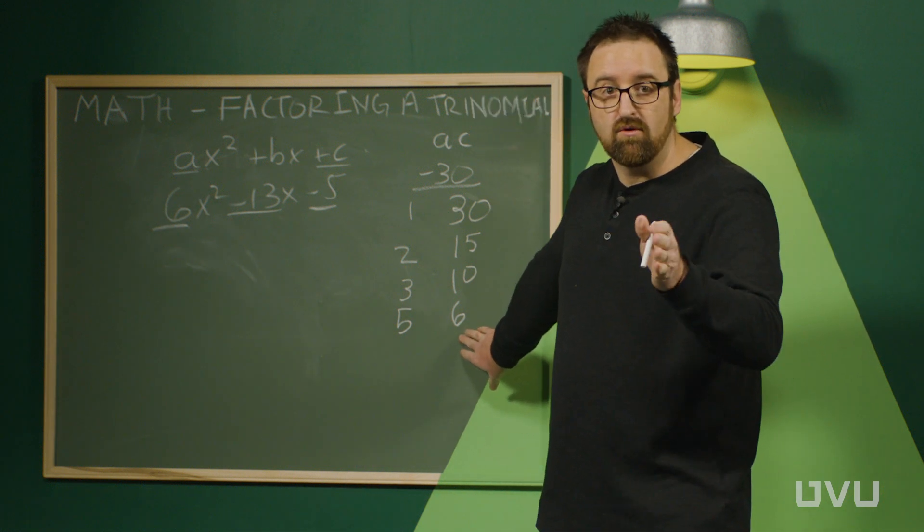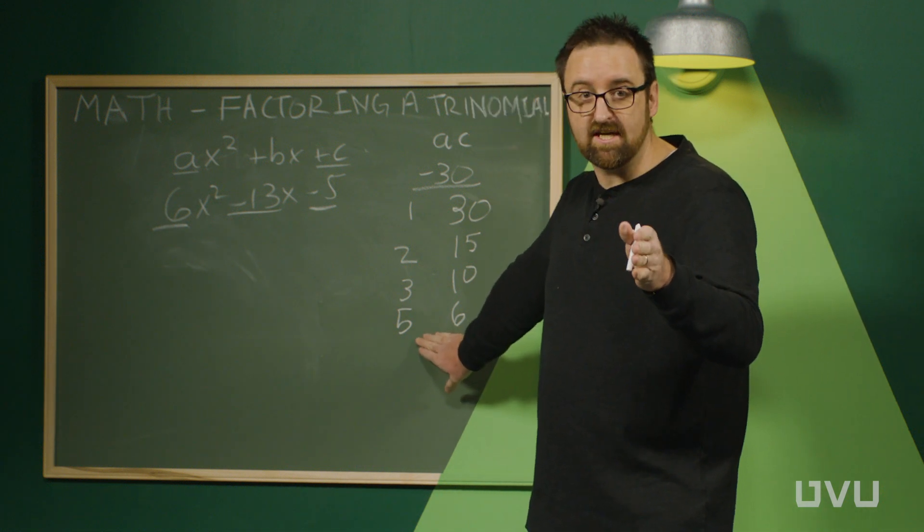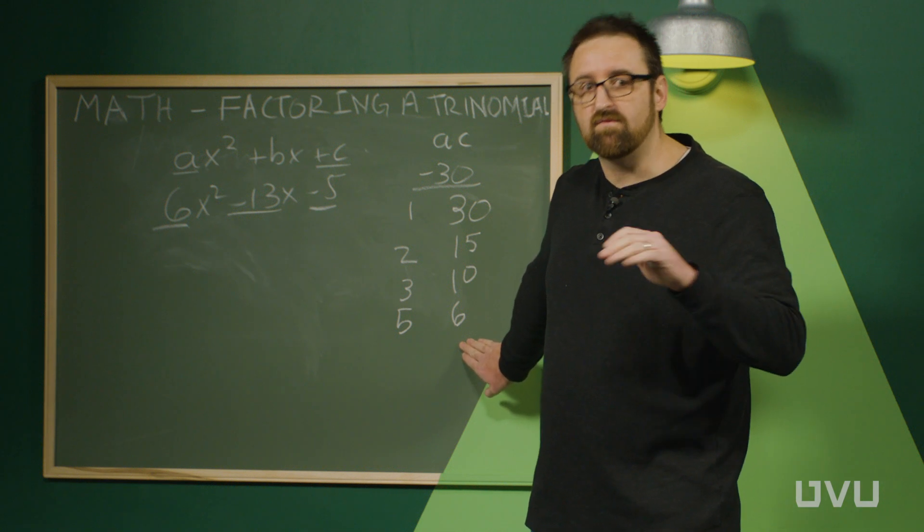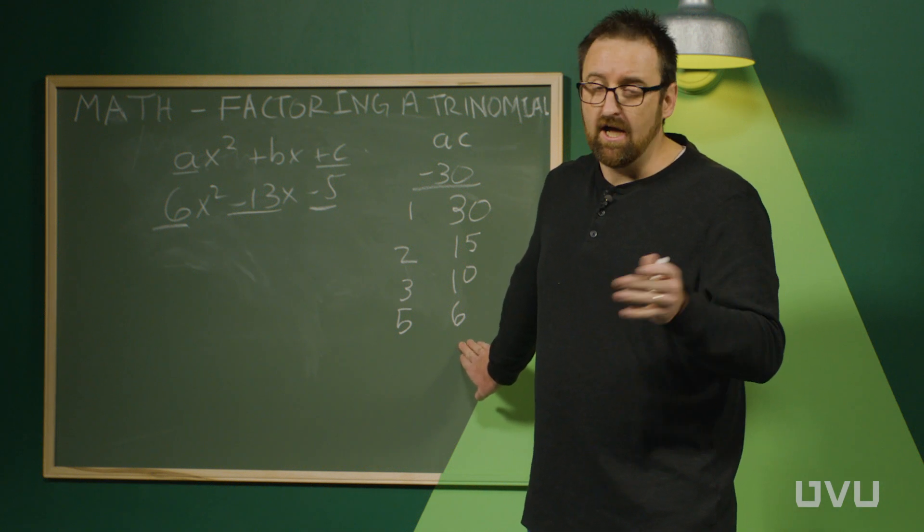Now as soon as you get to a number that you already have written, so our next number here would be 6, but 6 is already on the board. As soon as you get to that number, you have every single possible pair of factors. And you don't need to go any further.